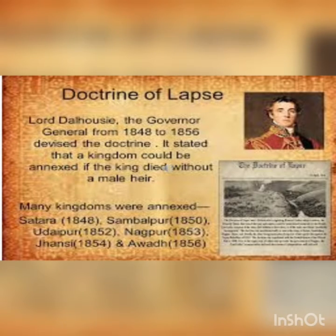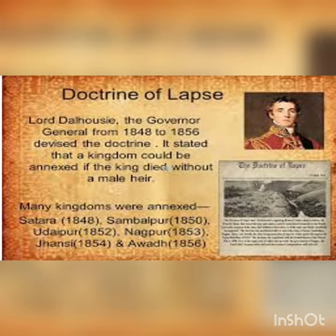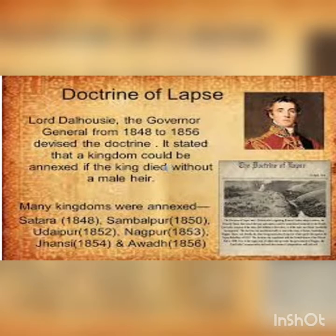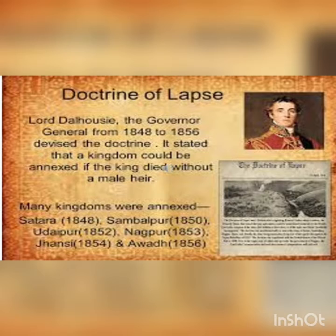Lord Dalhousie, the governor-general from 1848 to 1856, devised the Doctrine of Lapse. It stated that a kingdom could be annexed if the king died without a male heir. Basically, this policy was to expand British Kingdom in India by annexing independent Indian states where the king died without a male heir — meaning a son — and that kingdom would not be reverted by adoption. An adopted son could not take over that kingdom.